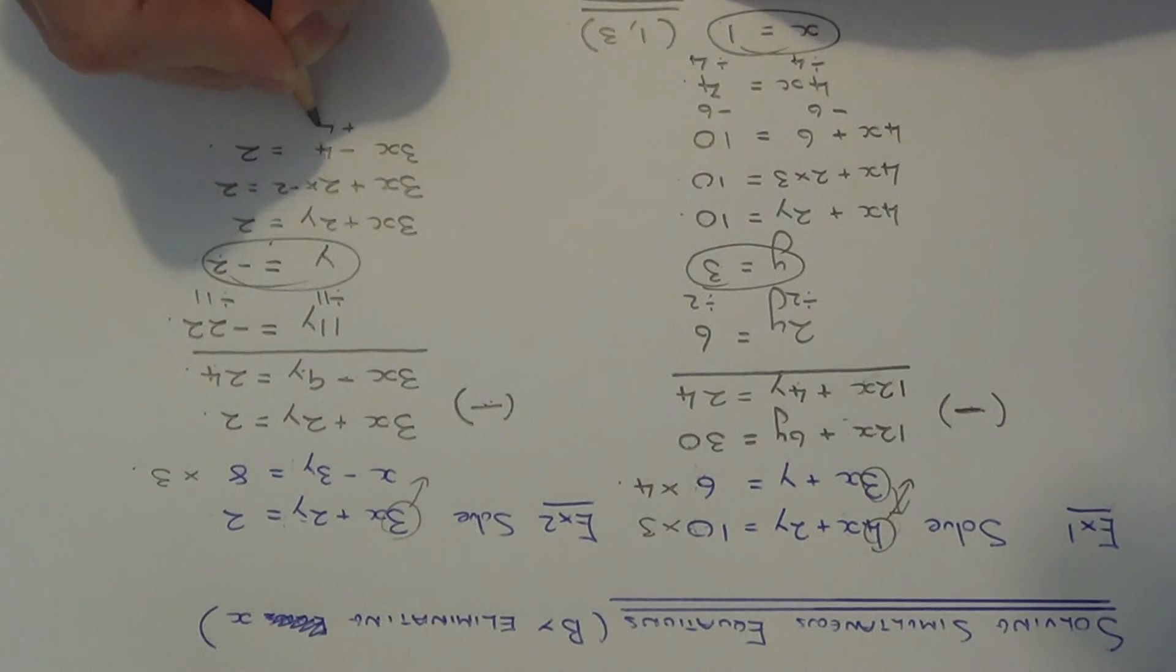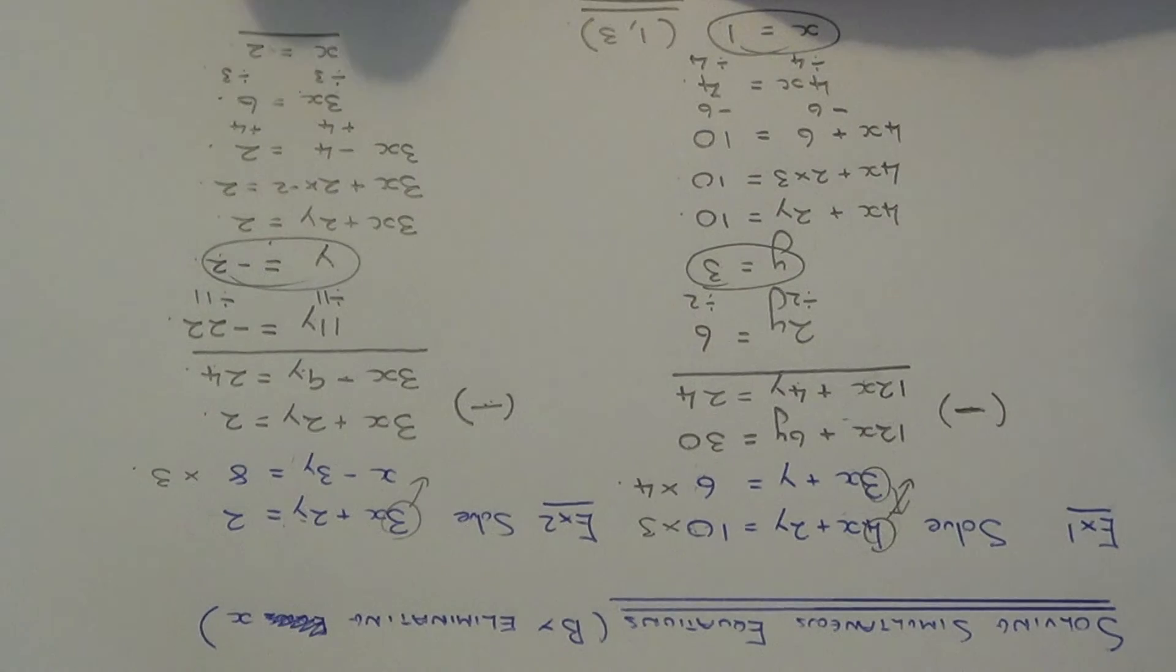So if we just solve this equation now. The opposite to minus 4 is plus 4, so we get 3x equals 6. And then x is now being times by 3, so if we divide both sides by 3, we get x equals 2. So our solution is 2, minus 2.